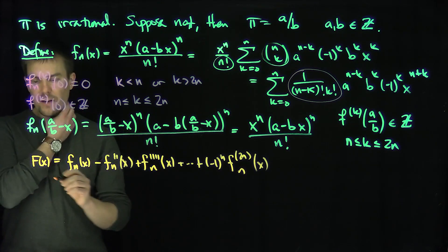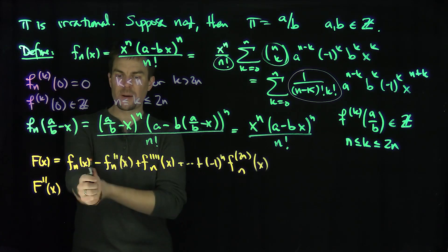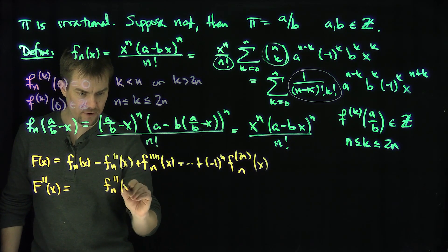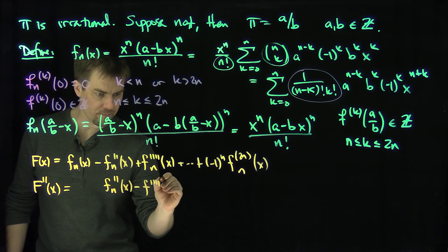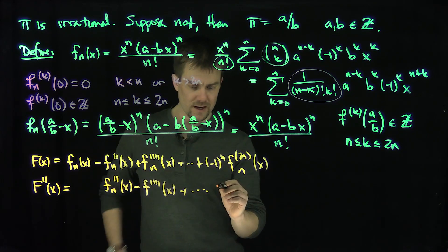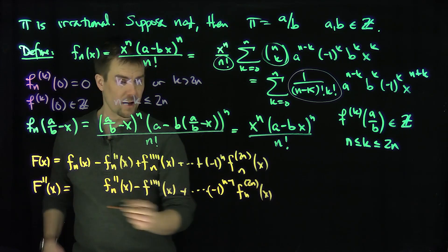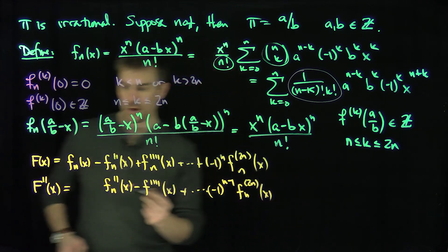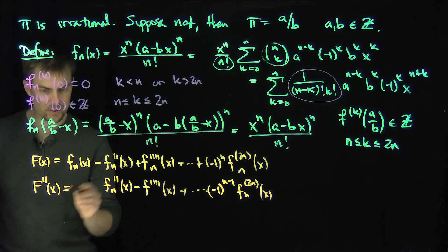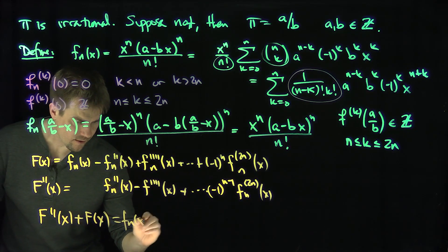And then I can notice that if I compute F double prime of x, that's going to shift everything over. This is going to turn into f_n double prime of x, minus f_n to the fourth derivative of x, all the way down to something that cancels, and the next derivative is going to be zero since it's a polynomial of degree 2n. So it looks like F double prime of x plus F of x is just f_n of x.